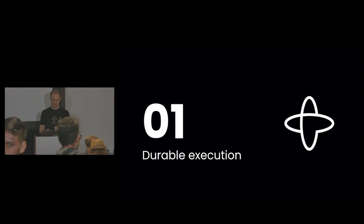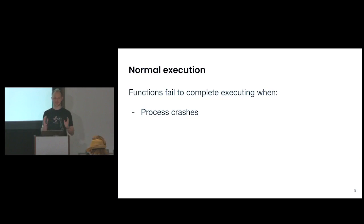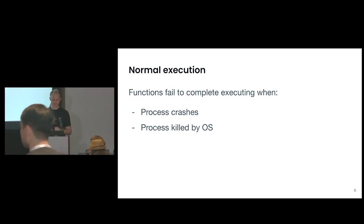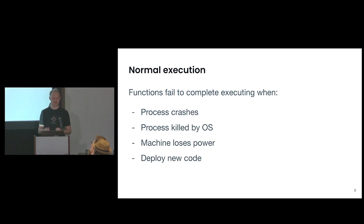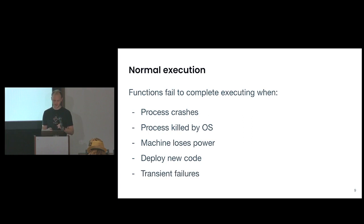What the heck is Durable Execution? Starting out with what normal execution is, and an important property of it, is that normal functions fail to complete executing when a process crashes. Maybe you divide by zero or have an unhandled exception. The process could be killed by the OS, maybe you're running out of memory, or the machine could lose power. You could deploy new code and there's a chance that running code goes past the graceful shutdown period and gets killed. There are also transient failures that can happen in any dependencies you call, like a downstream service — if that's temporarily down, you'll want to retry.